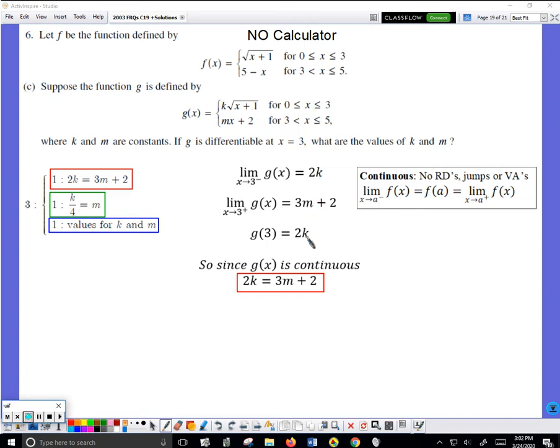These three must be equal for g to be continuous. G must be continuous for g to be differentiable. So I figured out an equation. It doesn't help me find k or m yet, but I can keep going at least. If I write that equation down, the grader sees it, the grader will give me one of the three points.